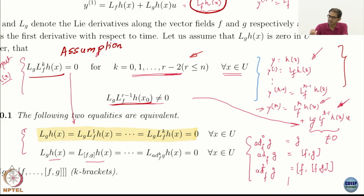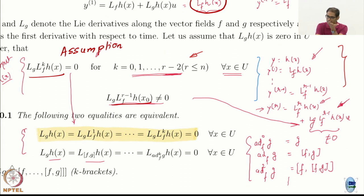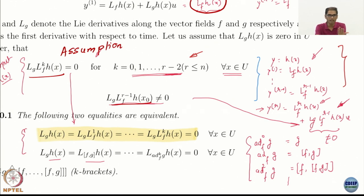Taking any subsequent derivatives is useless as far as feedback linearization is concerned. There is a very relevant question: is r the order of the system? No, r is not necessarily n. r is not n.